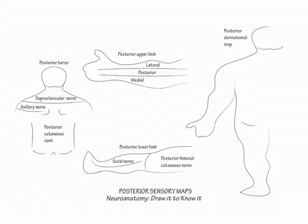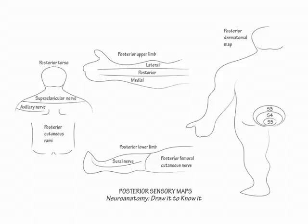To draw the posterior surface dermatomal map, begin with the anus. Label it S5. For simplicity, we exclude the coccyx, which is present within the center of S5. Show S4 encircling S5 and S3 encircling S4. Then show S2 encircling S3 superiorly and extending down the medial leg. Next, show S1 extending down the lateral leg.